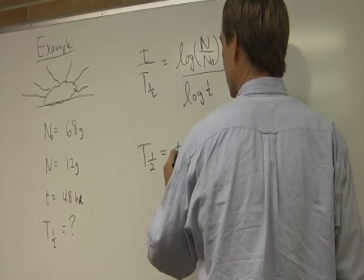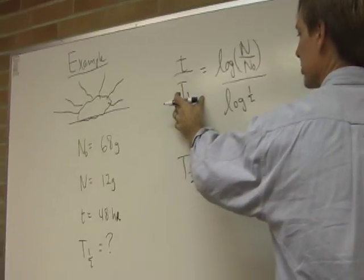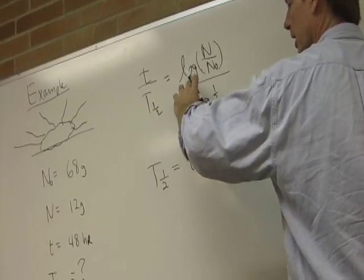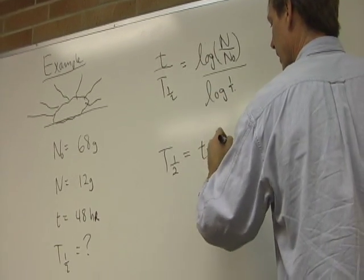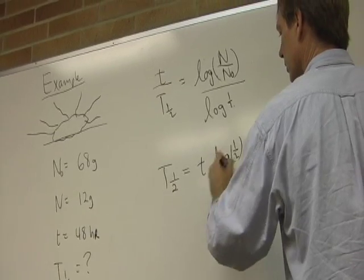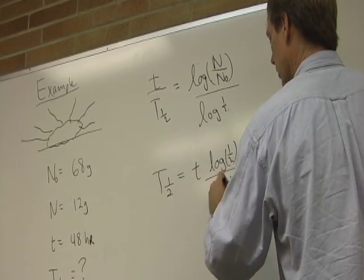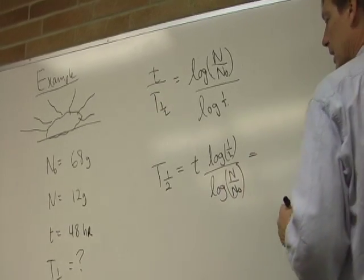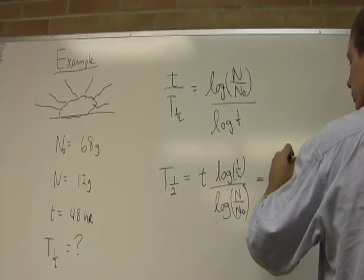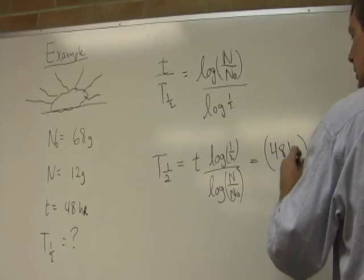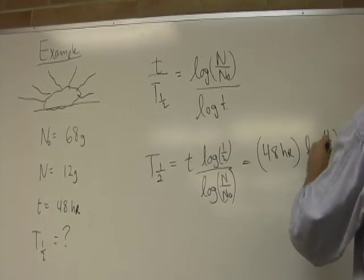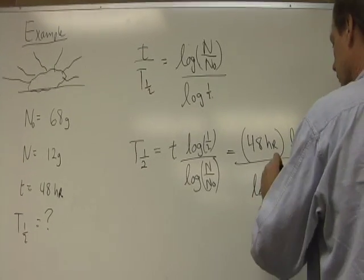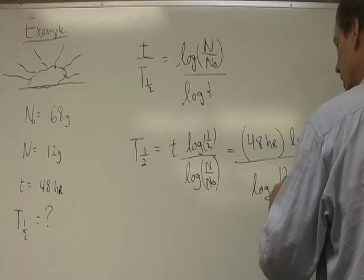The half-life is the time. If I multiply both sides by the half-life and they come up here, I have to get rid of all these. And so I'd have to multiply by the log of 1 half with a log of n over n sub 0, number of particles divided by the number I started with. And I'd wind up with 48 hours times the log of 1 half divided by the log of 12 grams over 68 grams.